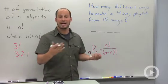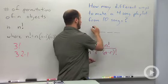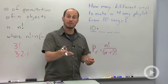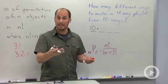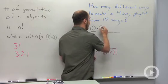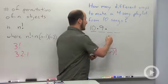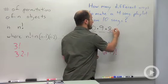The first slot could be one of ten songs, so we have ten options there. The second spot, we've already chosen one song, so we're left with nine. The third, we've chosen two songs already, leaving us with eight. And lastly we have seven.